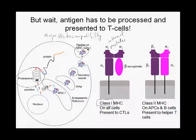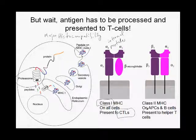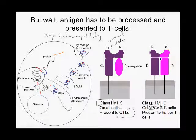On the cell surface, these class 1 MHC proteins with associated internal peptides are inspected by cytotoxic T cells. Some cells — special cells called professional antigen presenting cells, or APCs — include B cells, phagocytic cells called macrophages, and dendritic cells. In addition to class 1 MHC molecules, they also have class 2 MHC molecules. These class 2 MHC molecules specialize in presenting external or extracellular peptides.